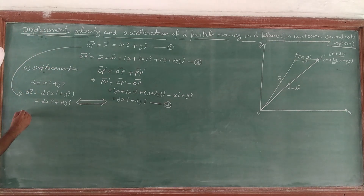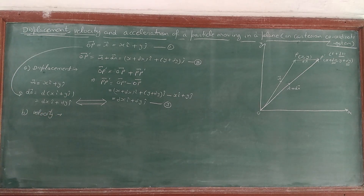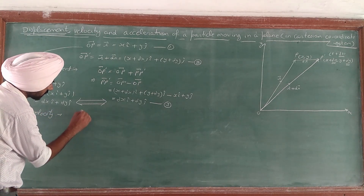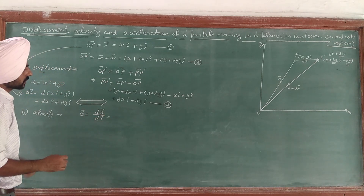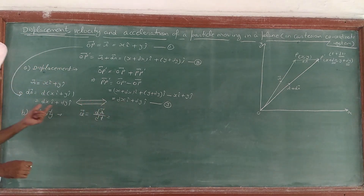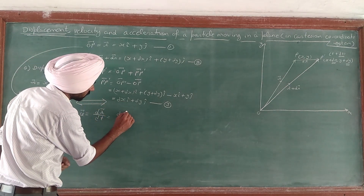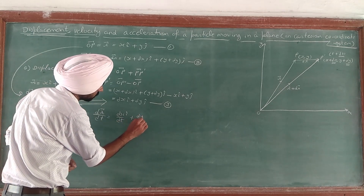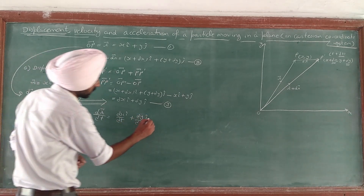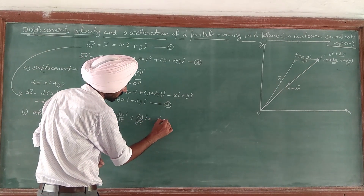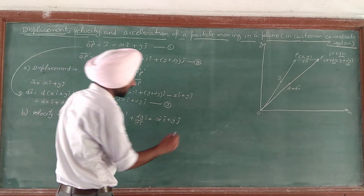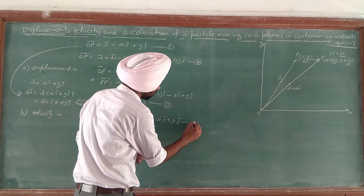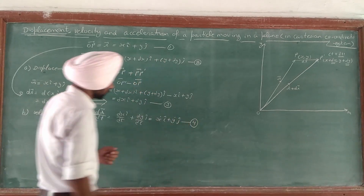Now we are interested in the velocity of the particle. Velocity of the particle is defined as the rate of change of displacement, so v = dr/dt. We know dr = dx·i-cap + dy·j-cap, so dr/dt = (dx/dt)·i-cap + (dy/dt)·j-cap. We can rewrite this as v = ẋ·i-cap + ẏ·j-cap, where ẋ is the derivative of x with respect to t and ẏ is the derivative of y with respect to t. This is equation number 4.